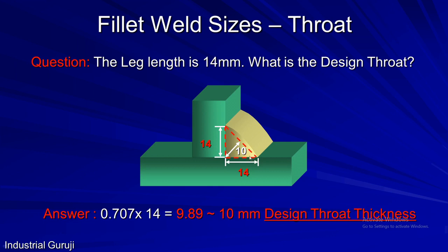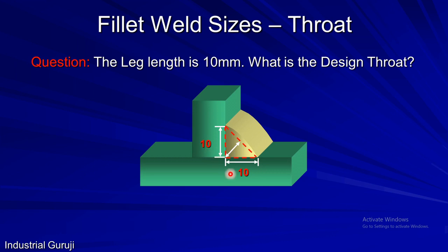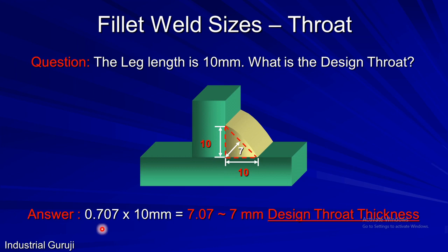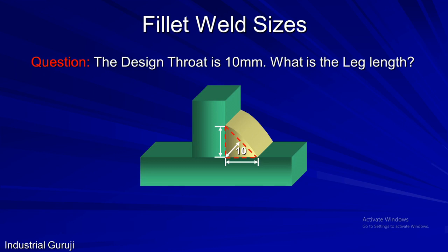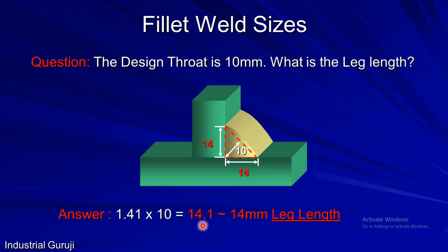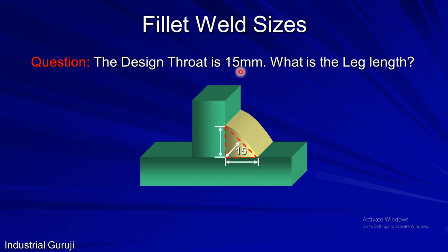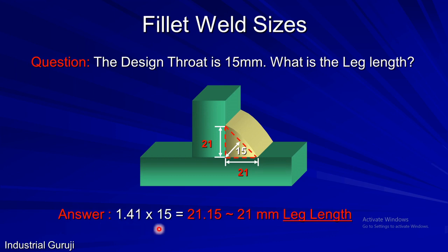Let's take another example: if leg length is 10 mm, then design throat = 0.707 × 10 = 7.07, approximately 7 mm. Similarly, if we know the design throat thickness, we can calculate leg length using: leg length = 1.41 × design throat thickness, that is Z = 1.41 × A. For example, if design throat is 10 mm, then leg length = 1.41 × 10 = 14.1, approximately 14 mm. For another example, if throat is 15 mm, leg length = 1.41 × 15 = 21.15, approximately 21 mm.